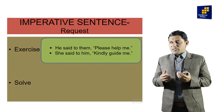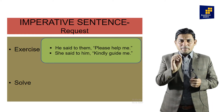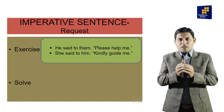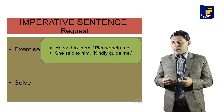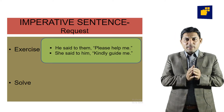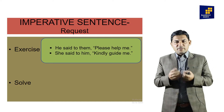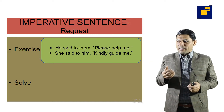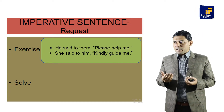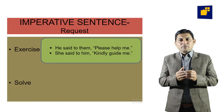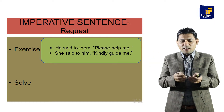In imperative sentences, one mood is the request mood. Example: 'He said to them, please help me.' Number two: 'She said to me, kindly guide me.' When we have the word 'please' or 'kindly,' both reflect request, politeness, and submissiveness. These sentences start from verbs — they do not have a surface subject. The sense is a request, so we will convert 'said to' into 'requested.'